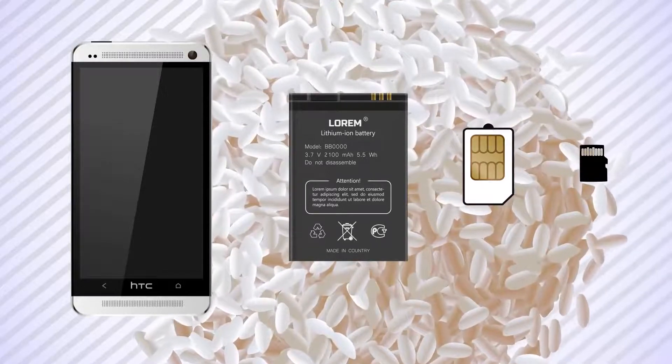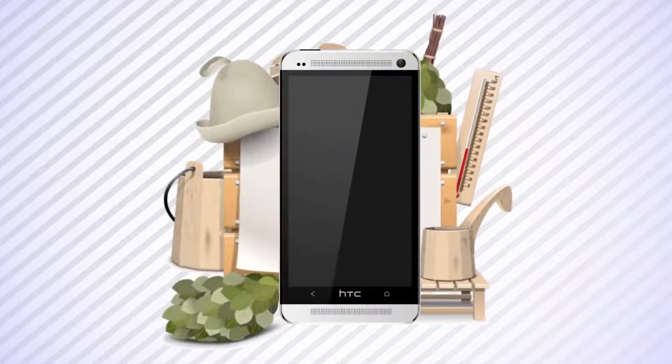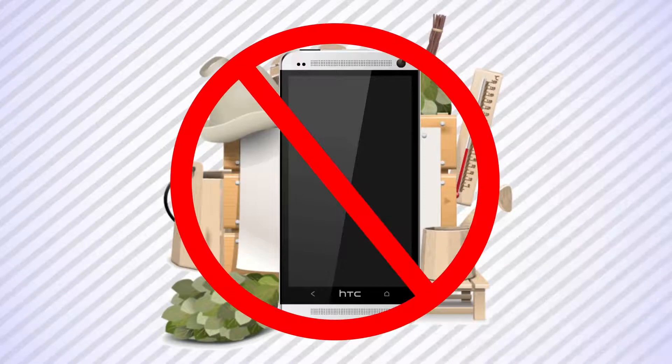You should also avoid taking your phone to places with high humidity, such as saunas and steam rooms, even if your phone is water resistant.